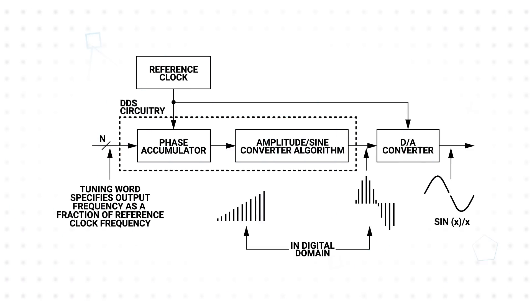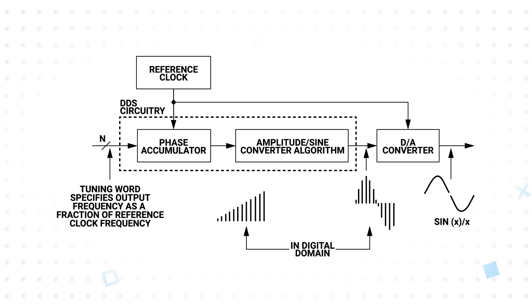The CN0511 uses a DAC-based direct digital synthesis architecture. The DAC is driven by a numerically controlled oscillator, which is comprised of a phase accumulator and amplitude-to-sinusoid converter.